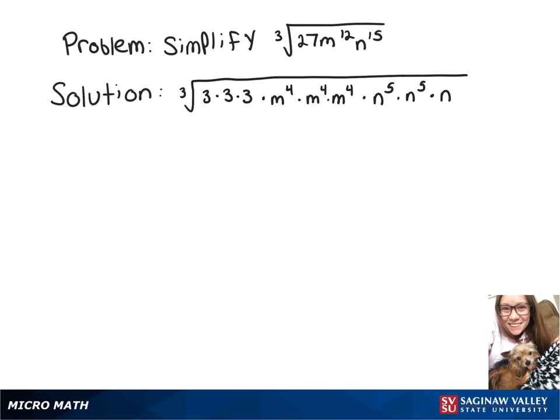So as you can see, we have 3 things that are multiplied by themselves 3 times, and that means that they're perfect cubes. So then we've just got 3 times m to the 4th times n to the 5th, and we can remove that cube root. This is our simplified answer.